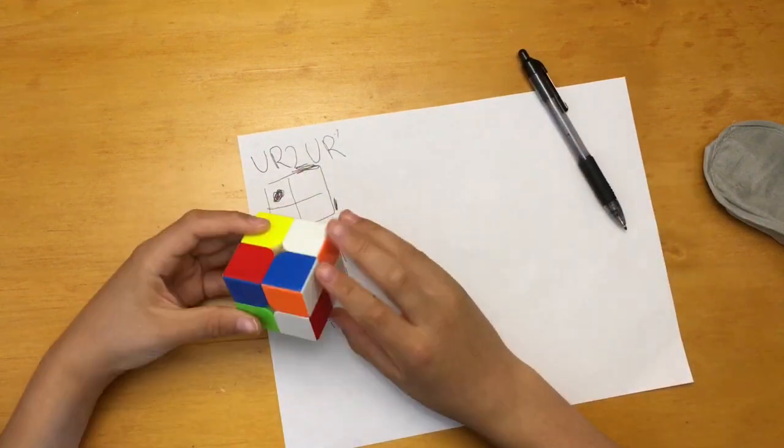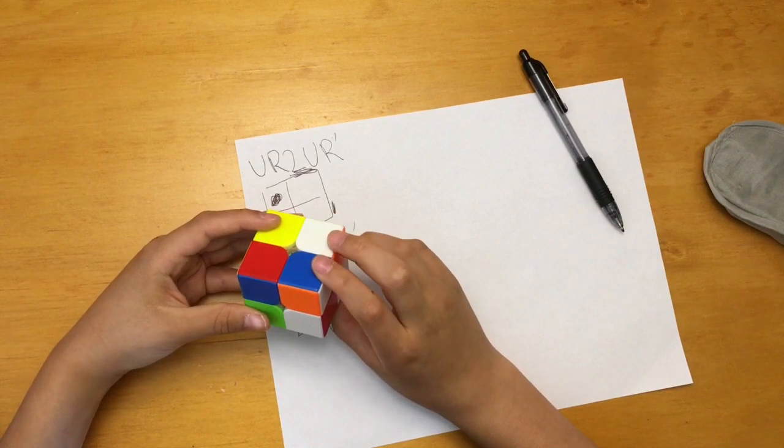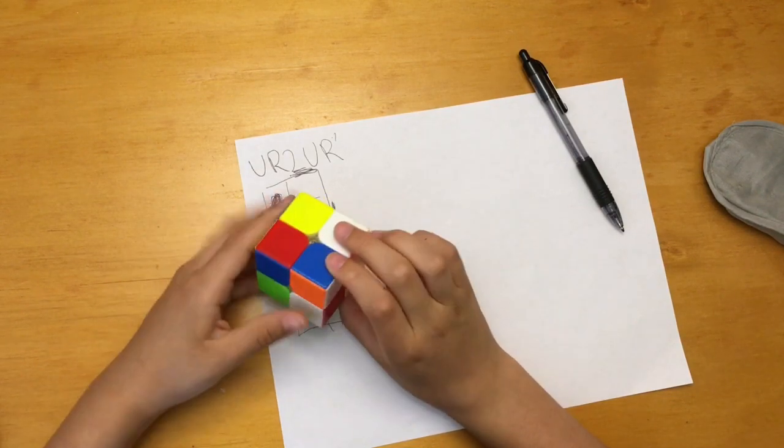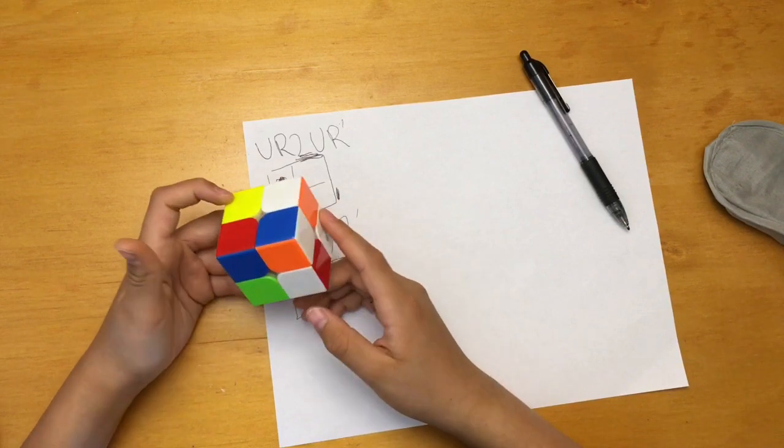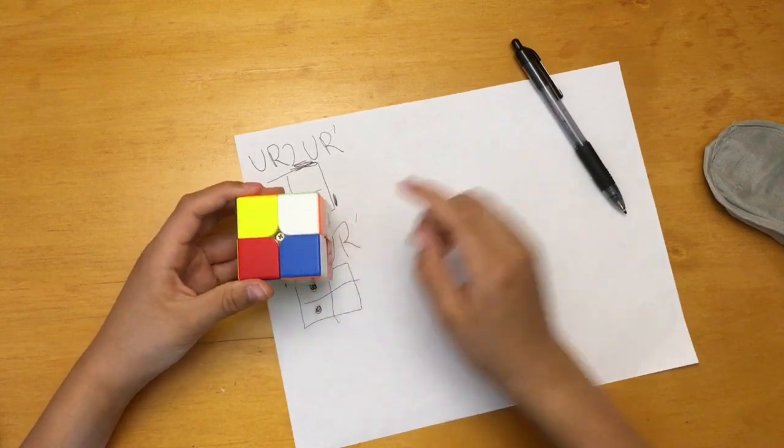Now let's track another one. We can track this one, this one will stay where it is. F does nothing to it, R hides it in the back slot, U does nothing to it because it's hidden, and then R' stays right here.